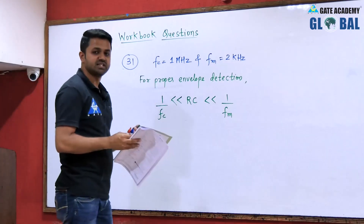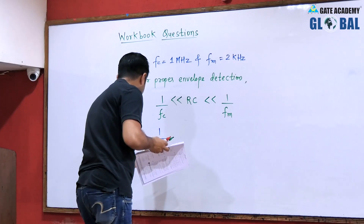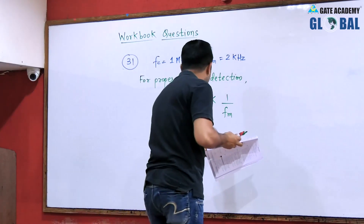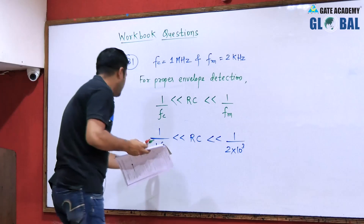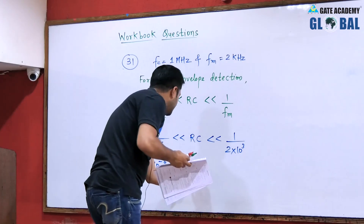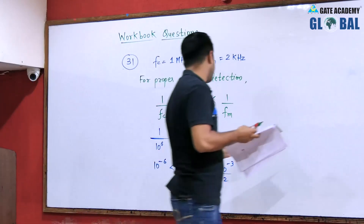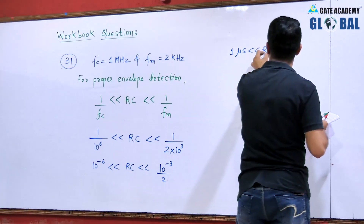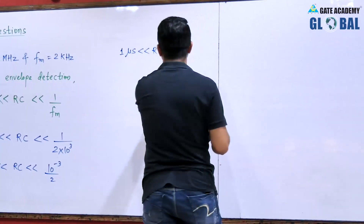For proper envelope detection, this condition should be satisfied: 1/fc, that means 1/10^6, should be much less than RC, and RC should be much less than 1/(2×10^3), which is 2 kilohertz. So 1/10^6 can be written as 10^-6, and 1/fm can be written as 10^-3 divided by 2. In microseconds, RC should be greater than 1 microsecond and much less than 500 microseconds.